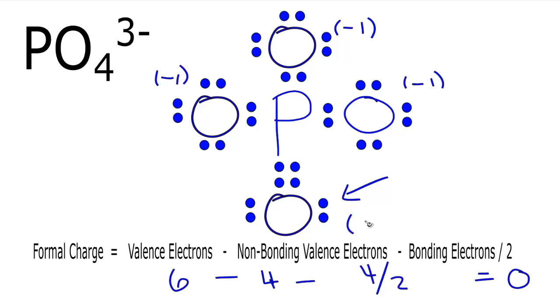So we've calculated the formal charges for each atom in the PO4³⁻ ion and we see that we have a negative 1, negative 1, negative 1 and a zero. So the total charge on the ion, total formal charge, is negative 3. That's not surprising because we have a negative 3 here on the phosphate ion.